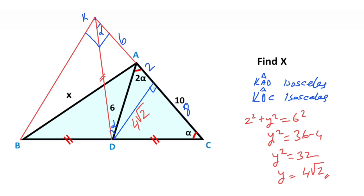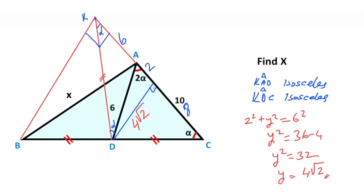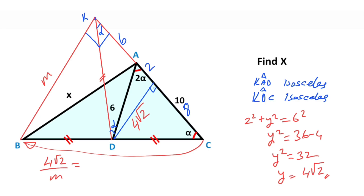After that, if you focus on this triangle — this triangle, this triangle, and this triangle are similar — because notice that these two lengths are parallel. I want to represent this length with m. So the ratio of 4√2 over m must equal 1/2, which means m is going to be 8√2.